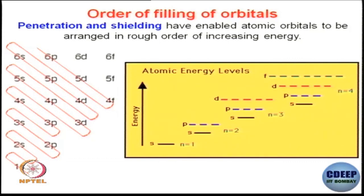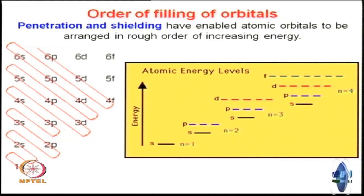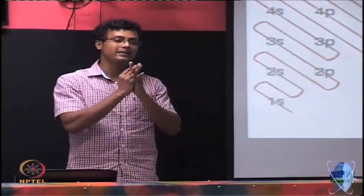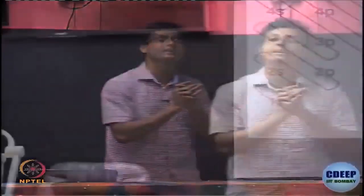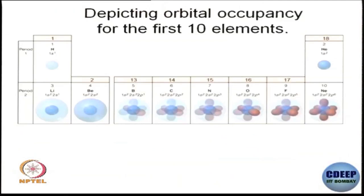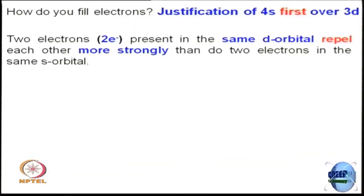Technically speaking, 4s has more energy compared to 3d because the principal quantum number is higher. 3s should be filled first since it has lower energy compared to 3p. So the order should be 3s, then 3p, then 3d, then 4s. But in reality, what we see is that 4s is filled before 3d. First, we need to understand that 4s and 3d have very similar energy; if anything, we would like to think that 3d has lower energy compared to 4s.